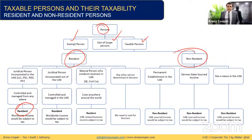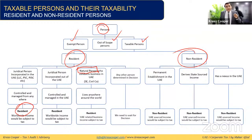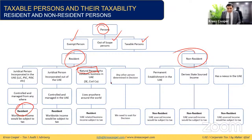The third category of resident taxable persons is natural persons. A natural person includes a sole establishment or civil company. If a natural person is conducting any business, all income related to that business — whether earned from within or outside the UAE — will be subject to UAE corporate tax. Any other person determined by cabinet decision will also be considered resident.